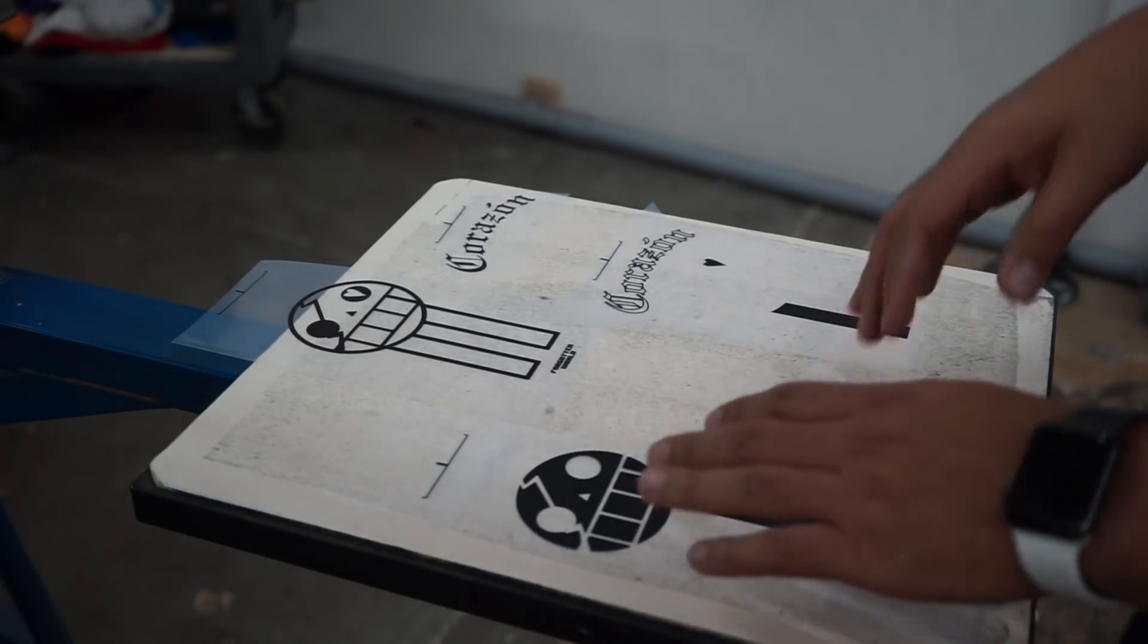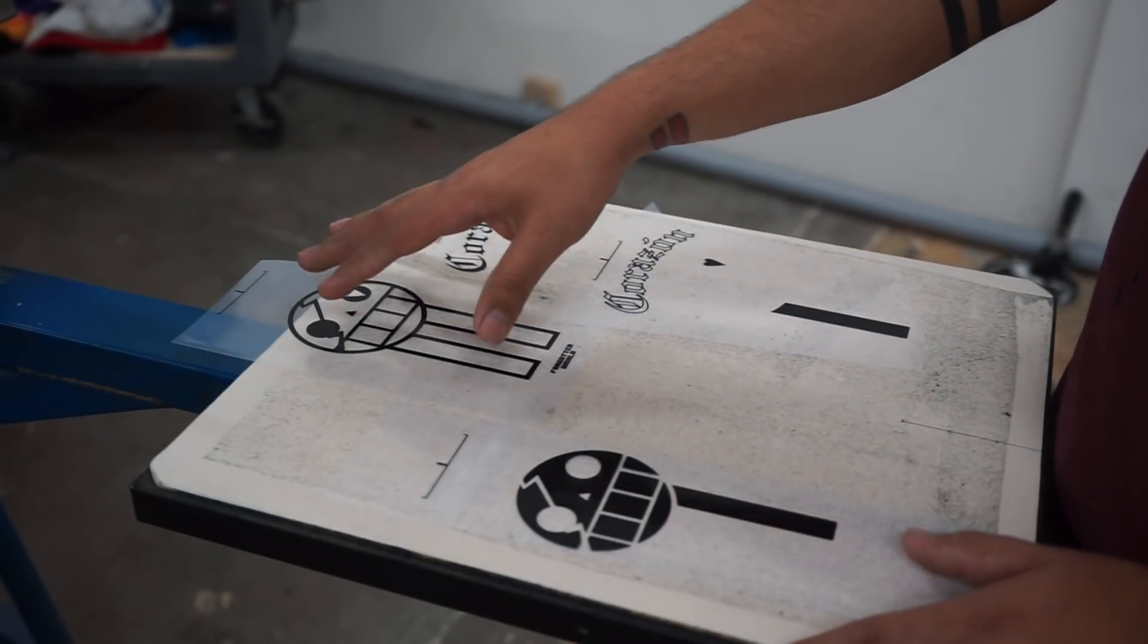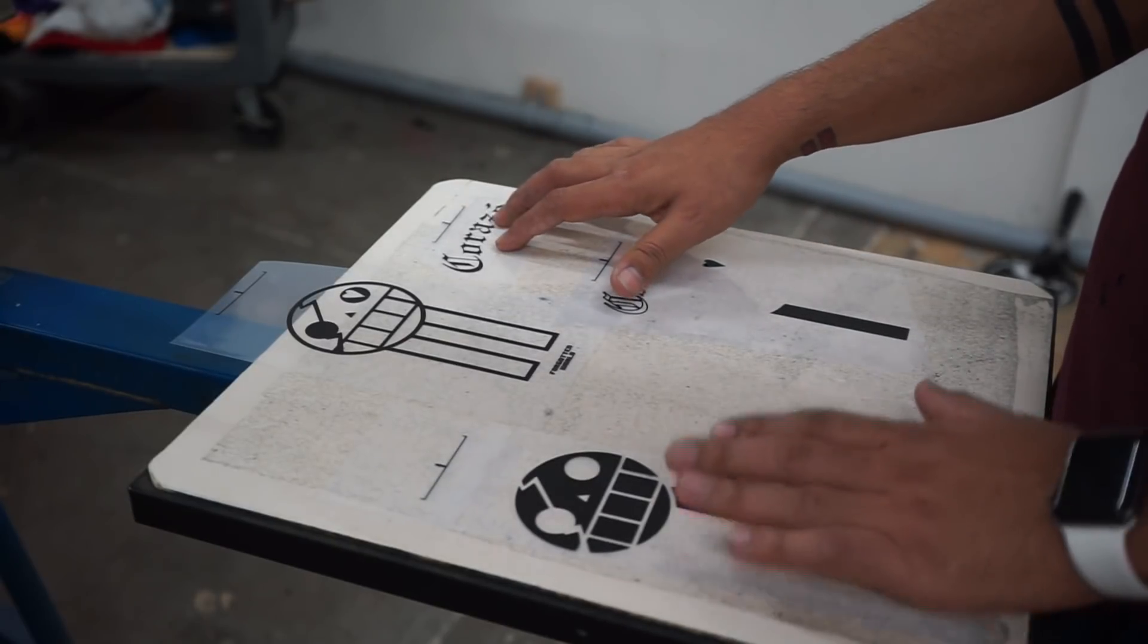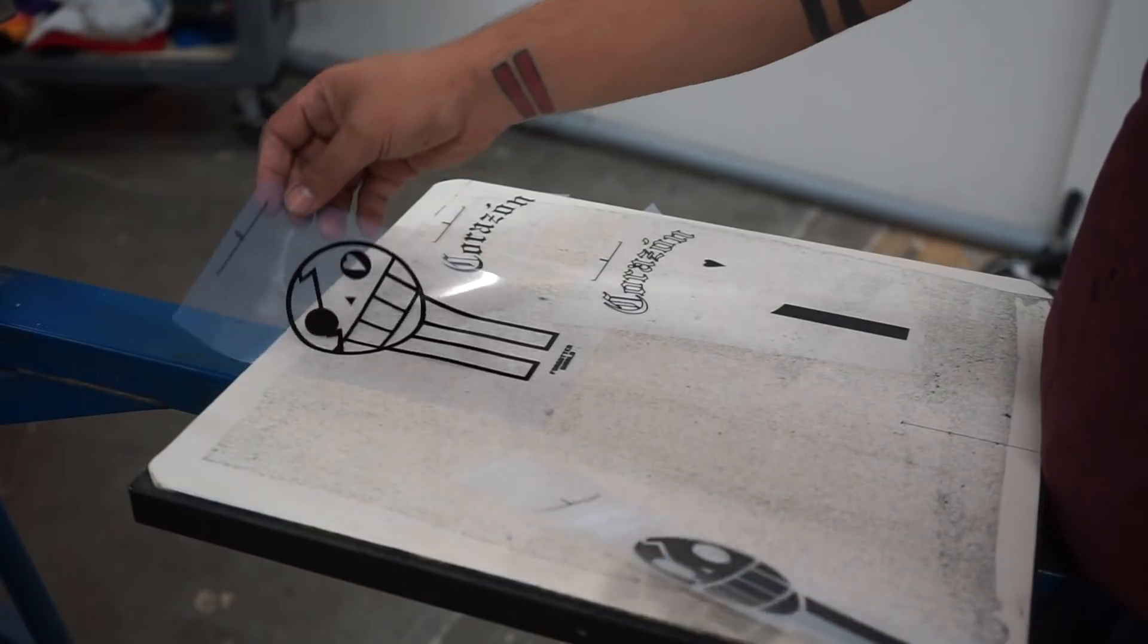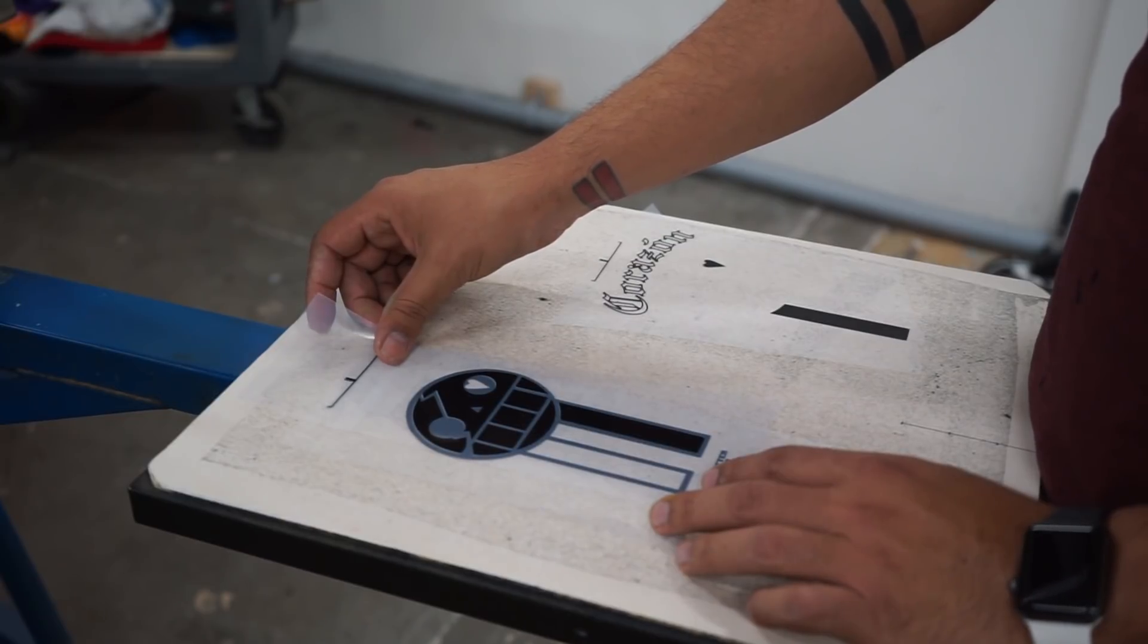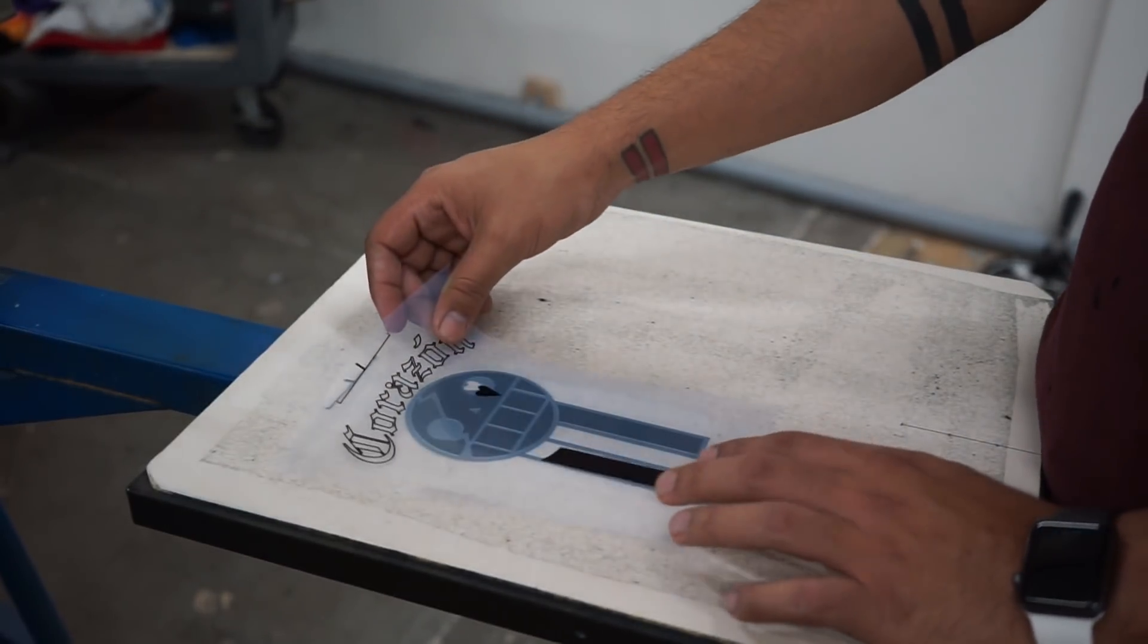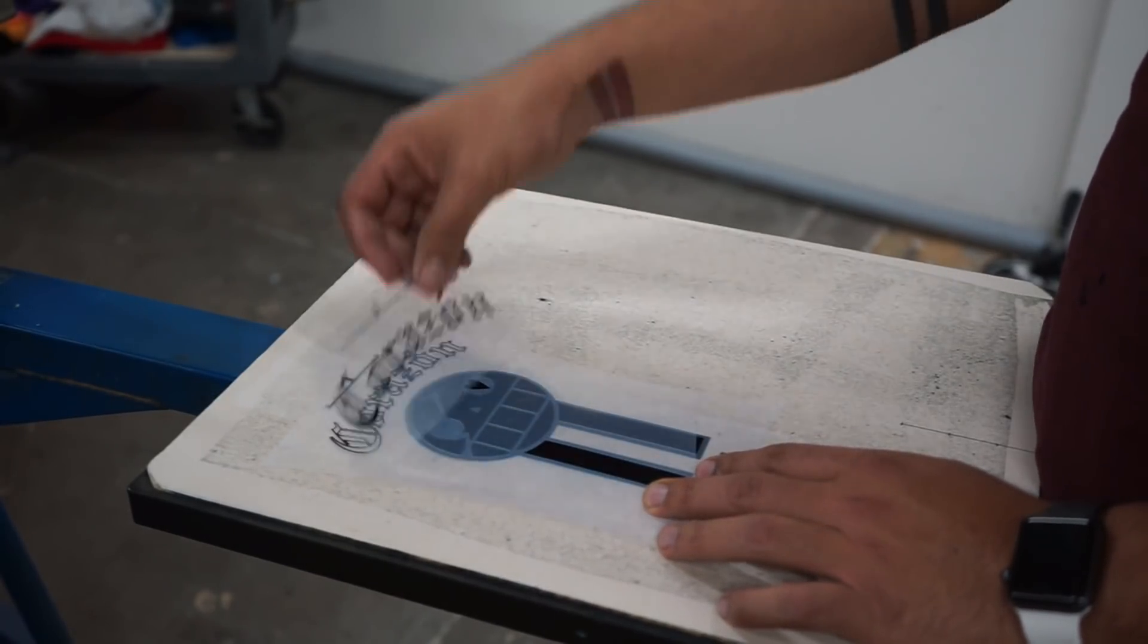Before we start setting up, I'm going to talk to you guys about what's going on here. We have the black, the pink, the yellow, and the white. I'm going to set up with this one because this is the black. We're going to set up the white to it, then we're going to bring in the pink, and then finally the yellow.